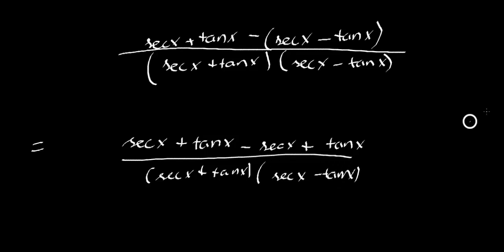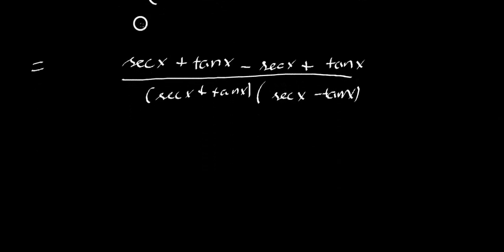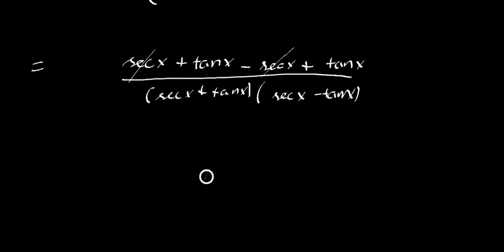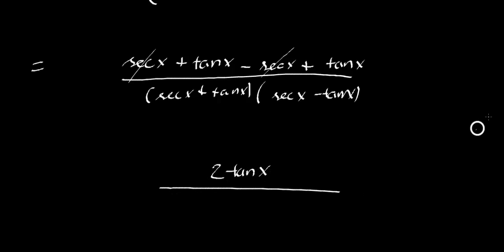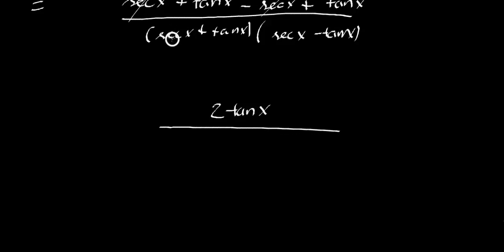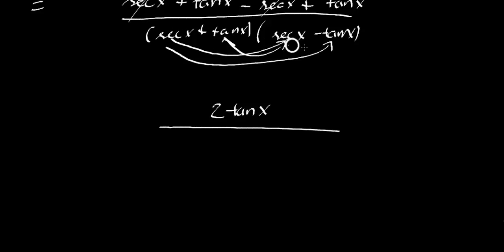Looking at our numerator: we have a positive secant and a negative secant, so obviously they cancel. Secant minus secant. And tan plus tan, which is just 2 tan x. That's our numerator. For our denominator, I'm going to multiply everything out and expand it.